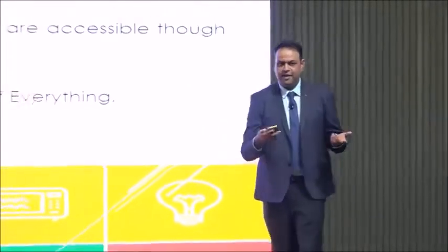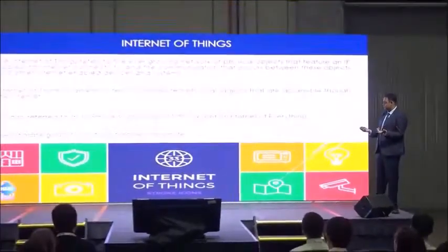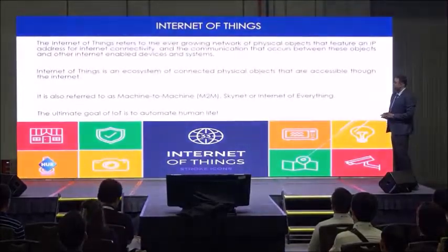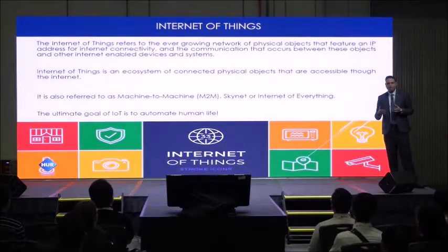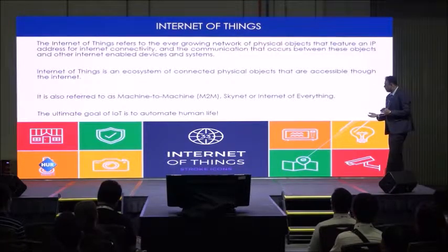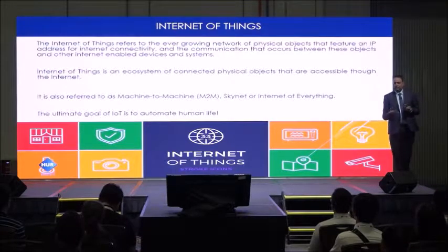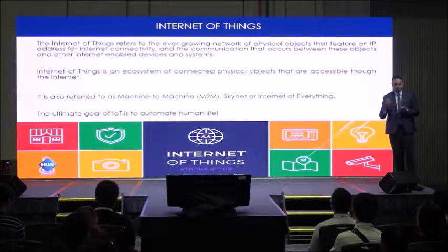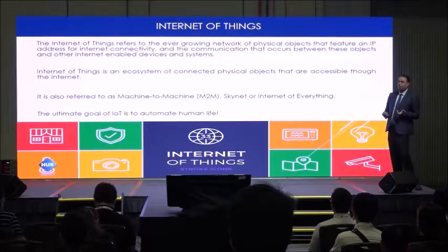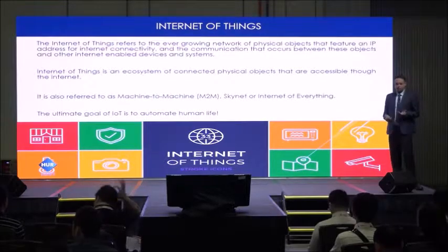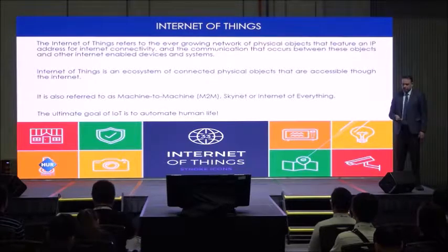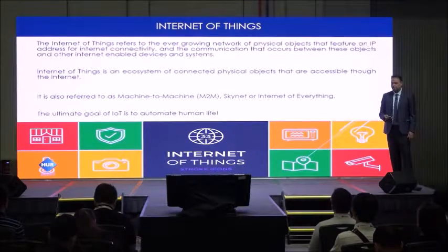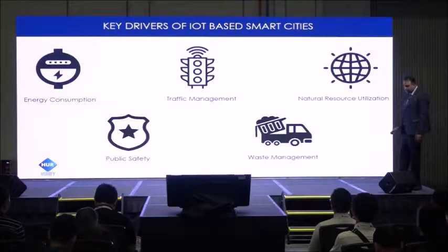So, this is a herd of things — everybody talks about Internet of Things, but nobody really knows what it is sometimes. Internet of Things is basically a growing network of devices that can be controlled from anywhere in the world. They have the communication technology and are basically sensors and actuators built into them so they can be controlled from outside. It's an ecosystem of connected objects accessible to the Internet. It's also referred to as M2M, Skynet, or Internet of Everything. The ultimate goal of IoT is to automate human life.